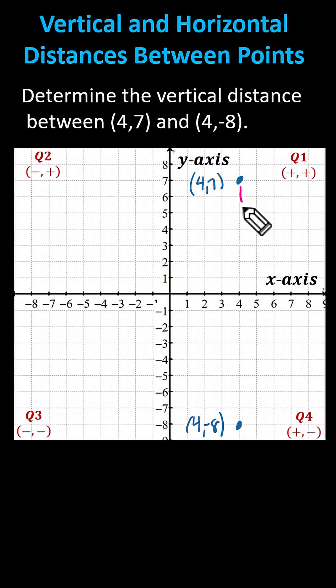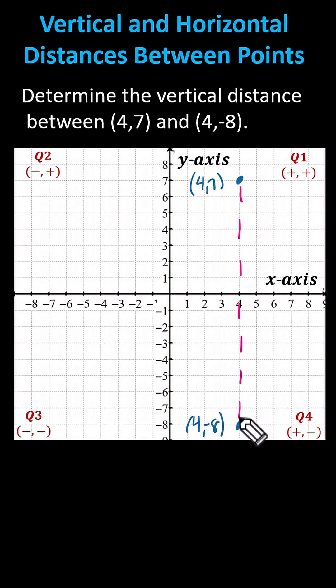We want to determine this vertical distance here, which because we're on the coordinate plane, we can just count. But we can also think of summing the distance the point four comma seven is from the x-axis, and the distance point four comma negative eight is from the x-axis.